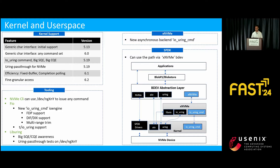Looking at upstream status: for the kernel, upstreaming was done in a phase-wise manner, and all features mentioned in this paper are upstream since kernel 6.2. We added support in various tools: NVMe-CLI can use the char interface to issue any command it can do on a block device. In FIO, we added a new io_uring command IO engine with capability to exercise FDP, DIF and DIX support, and multi-range trim. LibUring is aware of big CQE and SQE, and there are a bunch of upstream tests. We also added support into XNVMe, through which SPDK applications can also use this path.